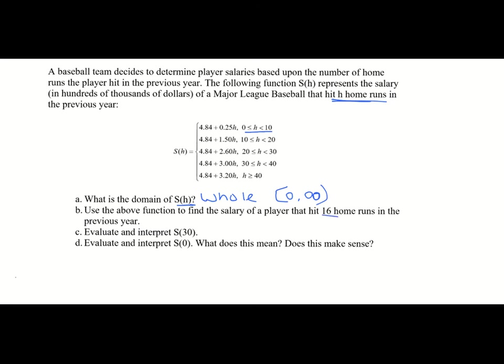Find the salary of a player who hit 16 home runs. 16 falls in the 10 to 20 range, so we use 4.84 plus 1.5 times 16. 1.5 times 16 is 24, so 4.84 plus 24 equals 28.84 — that's 28.84 hundred thousands of dollars. That's a lot of money.